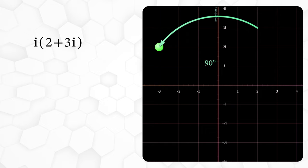We can verify this algebraically just by multiplying the i through. i times 2 plus 3i becomes 2i plus 3i squared. Remember that i squared is simply negative 1. So we get 2i minus 3, which is conventionally written minus 3 plus 2i.